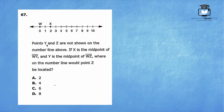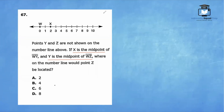For question 67, points Y and Z are not shown on the number line. X is the midpoint — remember, the midpoint is the middle of any line segment. X is the midpoint of WY, and Y is the midpoint of WZ. To go from W to X is two units, so we add point Y as two units away from X.